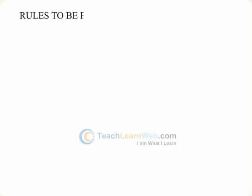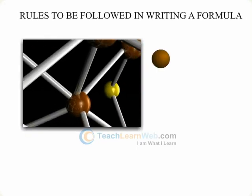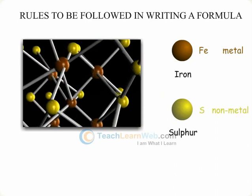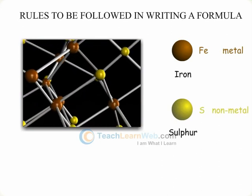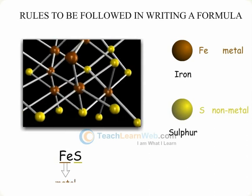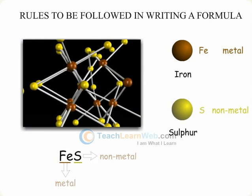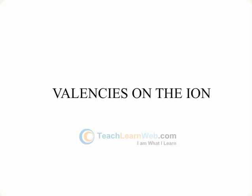Rules to be followed in writing a formula: When a compound consists of a metal and a non-metal, the symbol of the metal is written first. For example, Fe is the metal and S is the non-metal. The valencies of the ions must balance with each other.